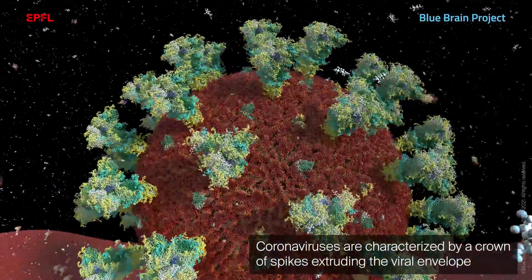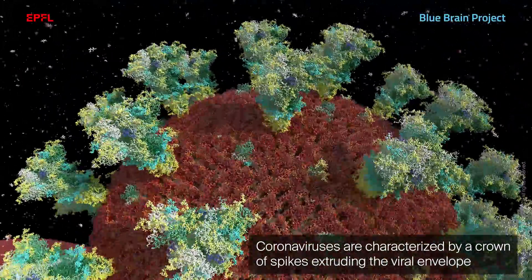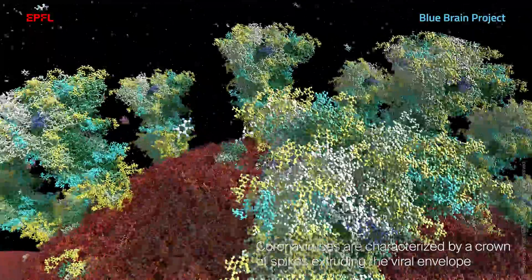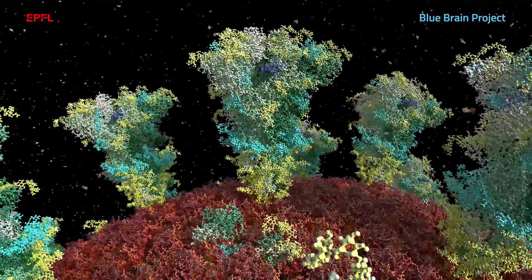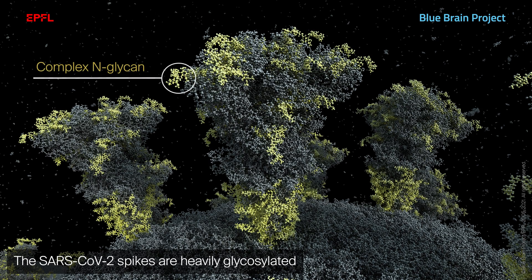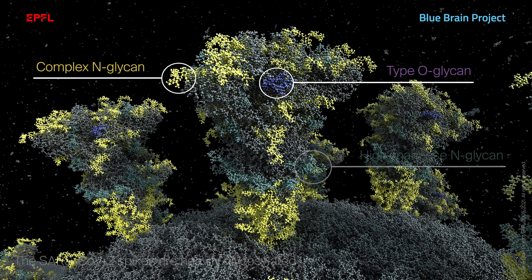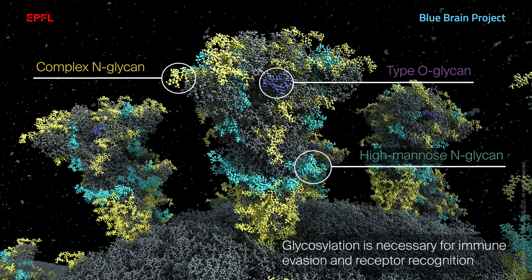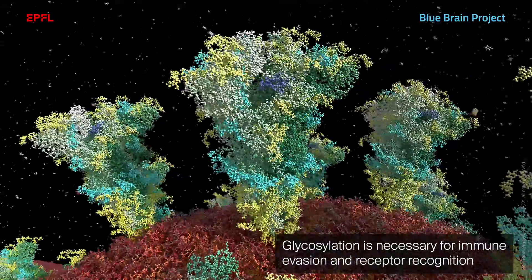Coronaviruses are characterized by a crown of spikes extruding the viral envelope. The SARS-CoV-2 spikes are heavily glycosylated. Glycosylation is necessary for immune evasion and receptor recognition.